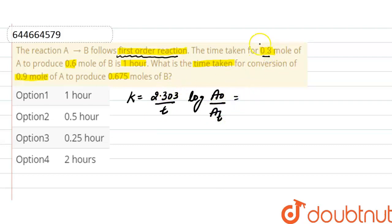Here initial concentration is 0.8 and from this initial concentration 0.6 moles are converted into product, so final concentration of the reactant will be 0.8 minus 0.6, that is 0.2. Put the values here: 2.303 divided by time required, here is 1, log of initial concentration 0.8 divided by 0.2.